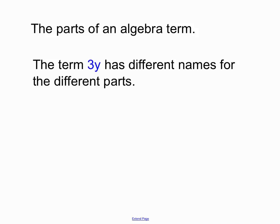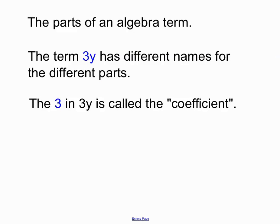Now there's different parts to an algebra term. The term 3y has different names for the different parts here. The 3 out the front, the number out the front, is called the coefficient in the term 3y. Sometimes we call that number the coefficient of y. So in this case we would say the 3 is the coefficient of y.